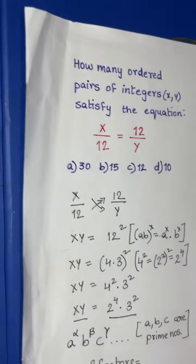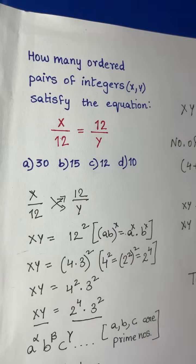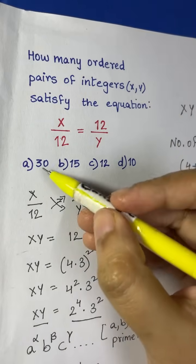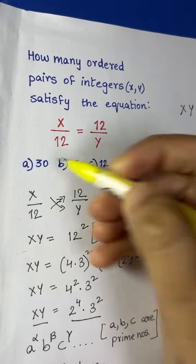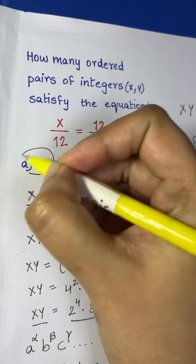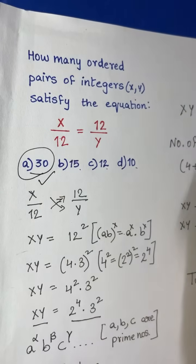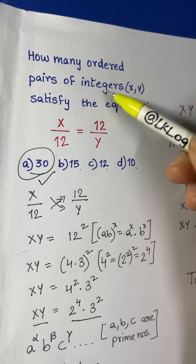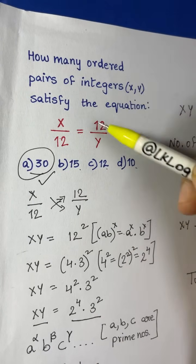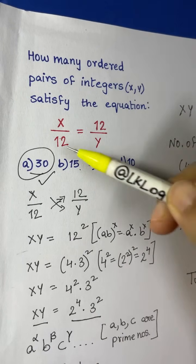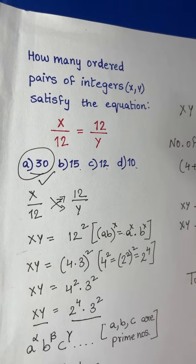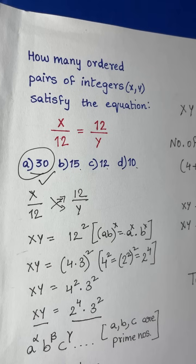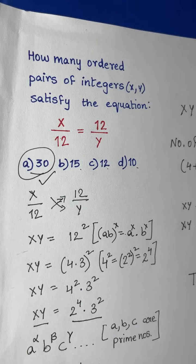Looking at the answer choices — 30, 15, 12, 10 — your answer is 30. So 30 ordered pairs of integers satisfy this equation. Hope this helps! If you have any suggestions, write them in the comment box. Thank you so much for joining — bye-bye, take care!